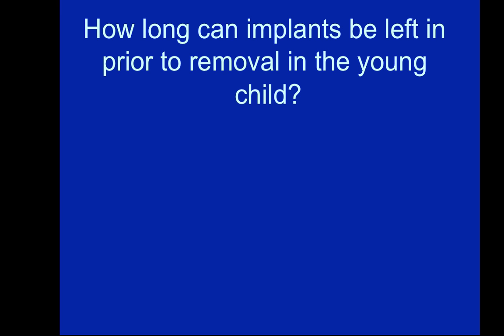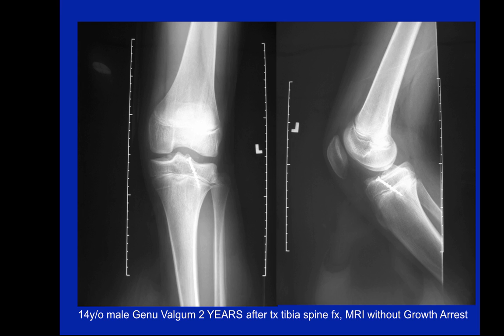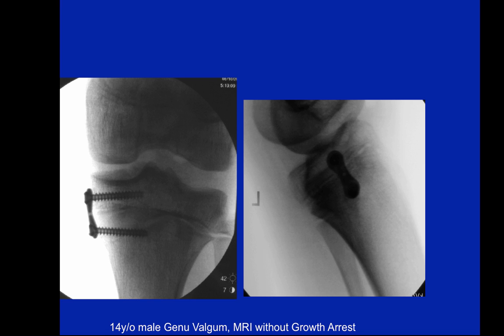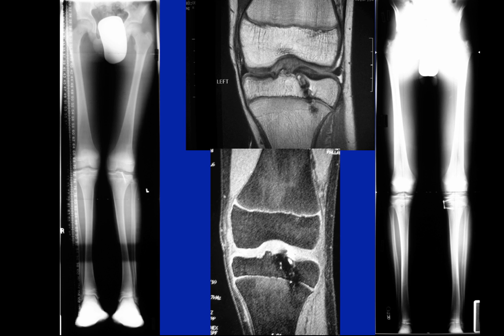How long can these implants be left in prior to removal in a young child without damaging the growth plate? To bring this point to discussion, I'd like to show a case: a 14-year-old who was two years out from arthroscopic treatment for a tibial spine fracture at an outside institution. The screw was long across the growth plate, and the child developed a valgus deformity due to tethering on the lateral side of the proximal tibia. MRI showed no overt growth arrest but demonstrated Harris growth arrest lines and asymmetric growth. We arthroscopically removed the tibial spine screw and placed a tension plate on the medial side of the knee, and two years later we had a nice correction of the deformity.